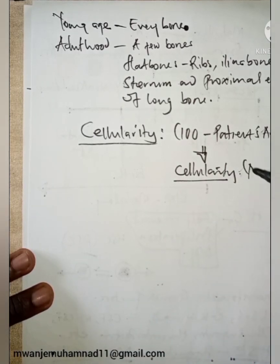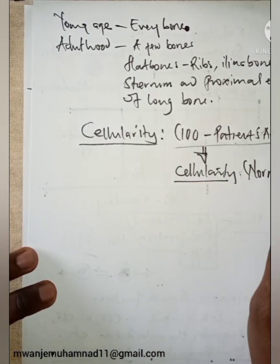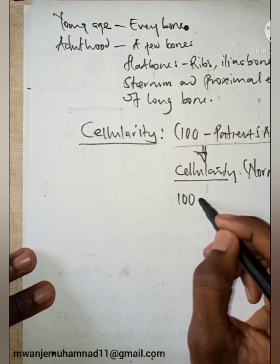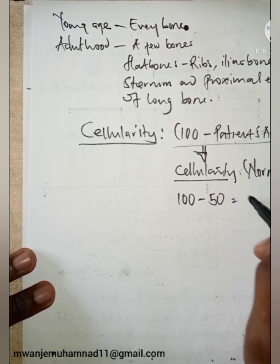This is under normal conditions. For a normal person, the formula gives the cellularity. For example, if you're 50 years, we expect the cellularity of your marrow to be 100 minus 50, which is 50% cellularity.